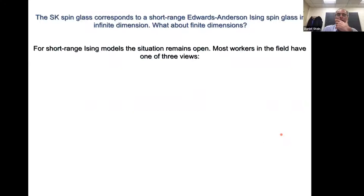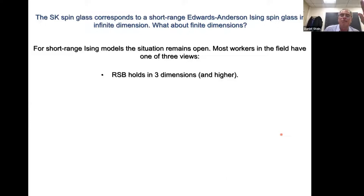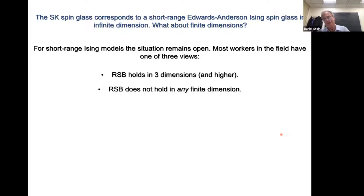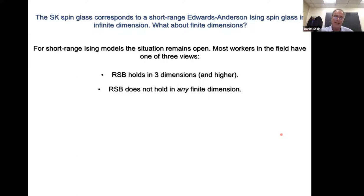It turns out that the situation remains open in finite dimensions for short-range spin glasses. Most people who work in the field have one of three views. The first — probably the majority — is that replica symmetry breaking does indeed hold in three dimensions and higher. Then there's another point of view that replica symmetry breaking does not hold in any finite dimension no matter how high you go — that the dimension going to infinity limit is singular for the spin glass, because systems with quench disorder just don't behave the way we're used to with more conventional ordered systems. And then there's a third point of view in between. All of these have some evidence to support them, which is why the situation is confused.